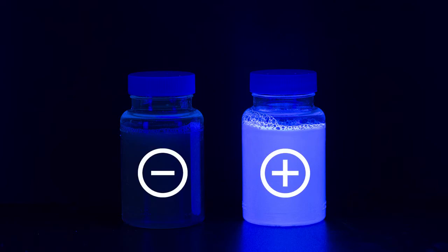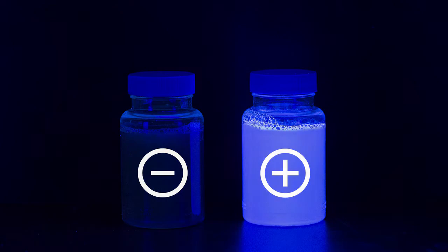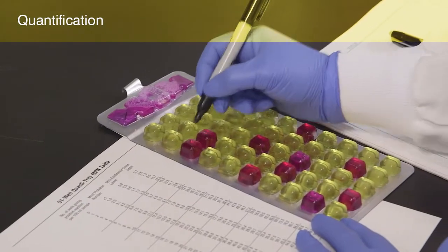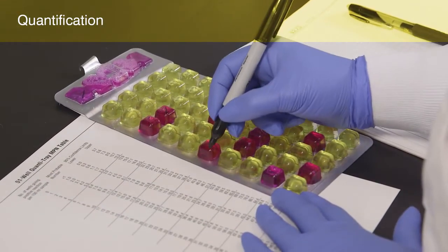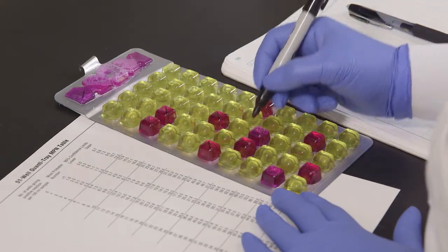If there is no fluorescence, the sample is negative for E. coli. Next, you'll learn how to use the ColiShore test with the QuantaTray system to determine the number of coliforms and E. coli in a water sample.